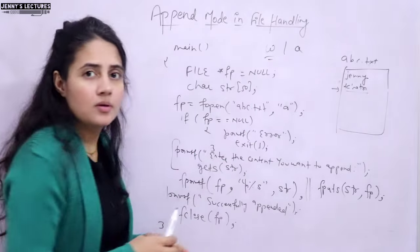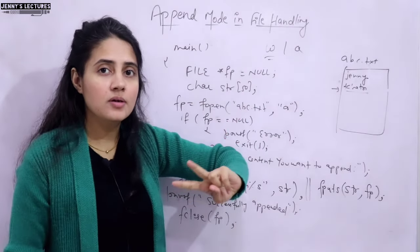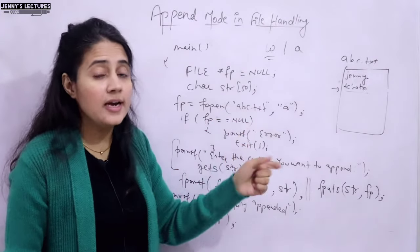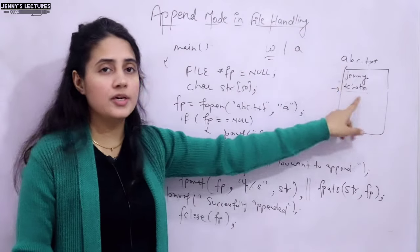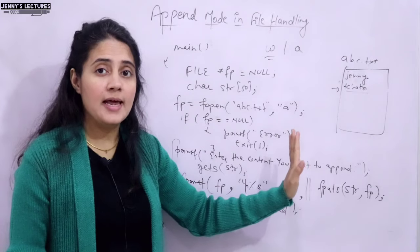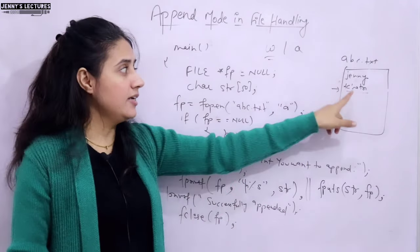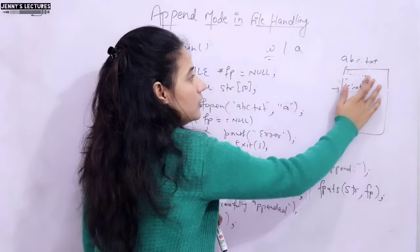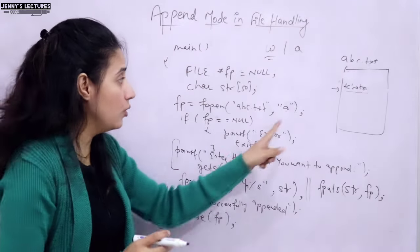Let's compare write mode and append mode. Both will create a new file if one doesn't exist — that's the similarity. The difference is: in write mode 'w', the content is overwritten. If 'Jenny' is in the file and you open in write mode to add 'Khatri', Jenny is erased and only Khatri remains.